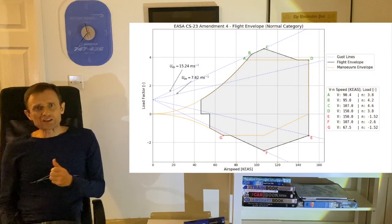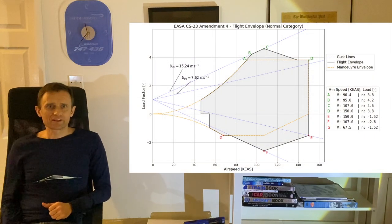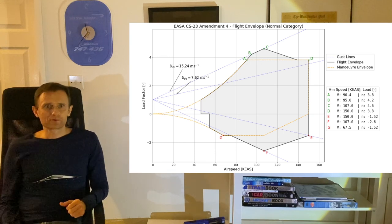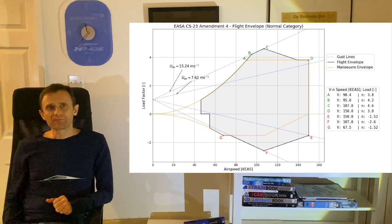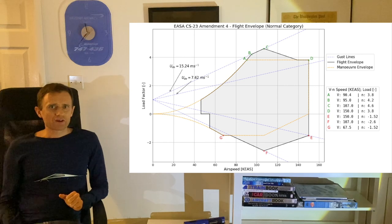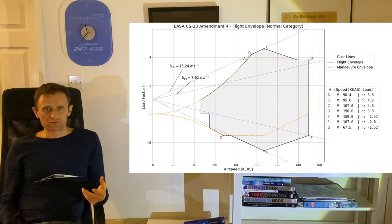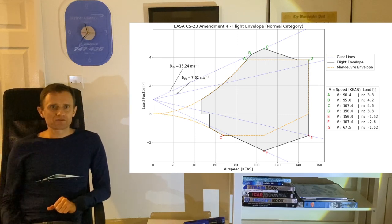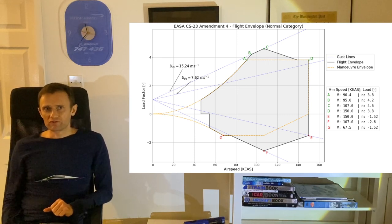A VN diagram such as this one is actually two diagrams on top of one another. The effects of maneuver loads, or the maneuver envelope shown as the yellow dashed line here, are superimposed on the effects of gust loads, or the gust envelope shown in blue dashed dots here. Let's start with the defining features of the maneuver envelope.